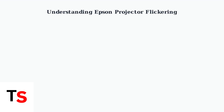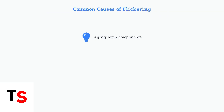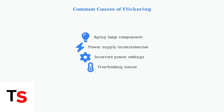Epson projector flickering is a common issue that can disrupt presentations and viewing experiences. Understanding the root causes helps you address the problem effectively. Flickering typically stems from four main areas: aging lamp components, power supply problems, incorrect settings, and overheating. Each requires a different approach to resolve.